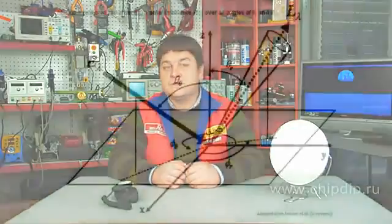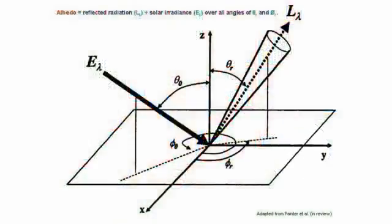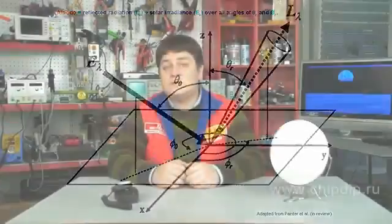One of the characteristics possessed by any material body is albedo. Albedo characterizes the reflective properties of a body's surface. It is the ratio of radiation flow scattered by the surface to the flow incident on it. It comes from the Latin word 'albus', meaning white. This value has no dimension.